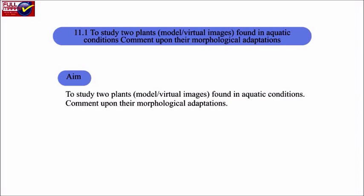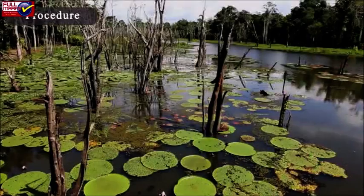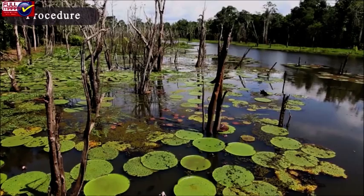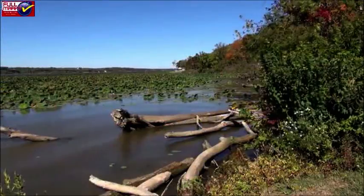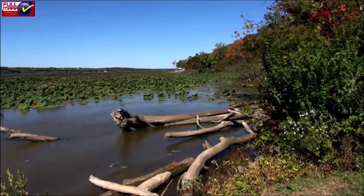Materials Required: Specimens or models of aquatic plants. Procedure: Plants which grow in wet places or in water either partly or wholly submerged are called aquatic plants or hydrophytes.